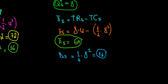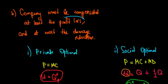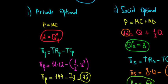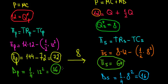We said the company must be compensated at least the profit loss and at most the damage reduction. The profit under private production is $72 and under social optimal is $64, so the profit decreased by $8 — we must compensate at least $8. At most, we compensate the difference in damage: $36 minus $16, which is $20. So the payment range is minimum $8 and at most $20.